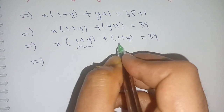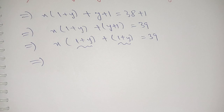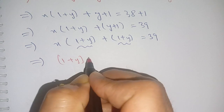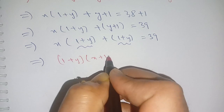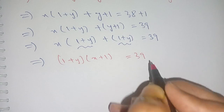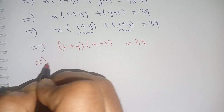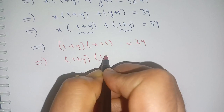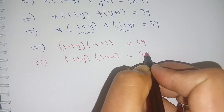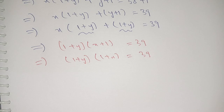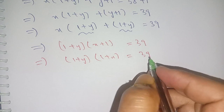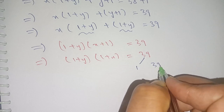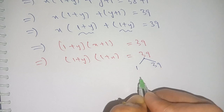Taking out (1 plus y) as a common factor from both terms, we get (1 plus y) times (x plus 1) is equal to 39, or equivalently (1 plus y) times (1 plus x) is equal to 39. Now we factorize 39.